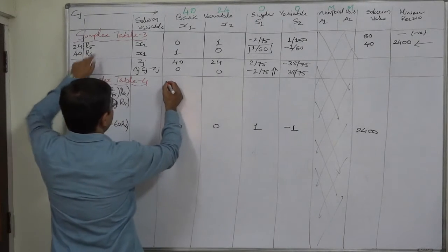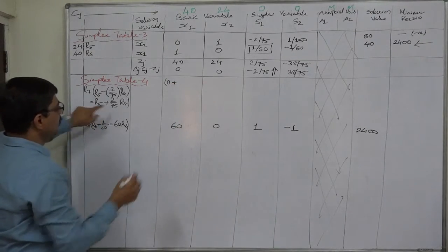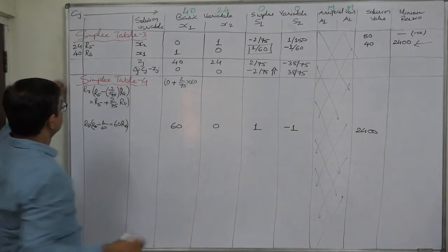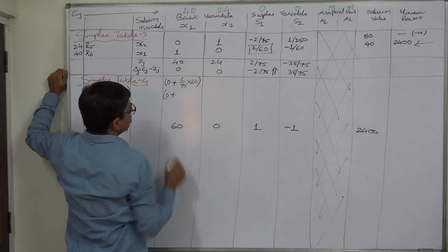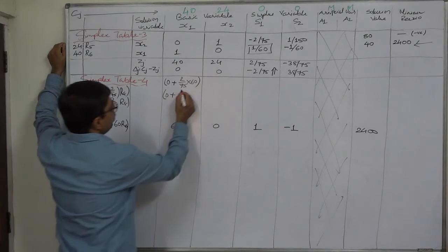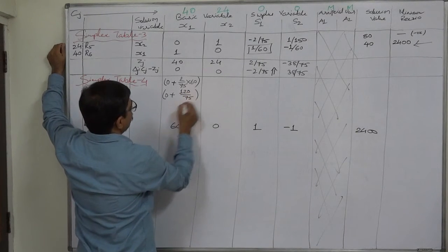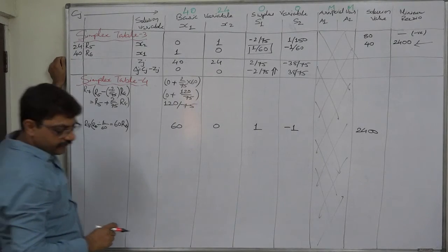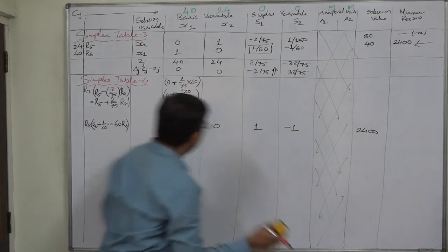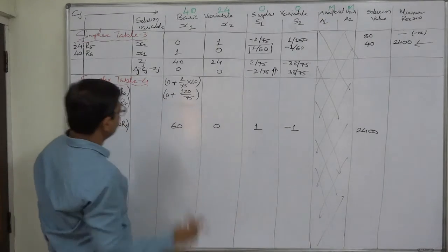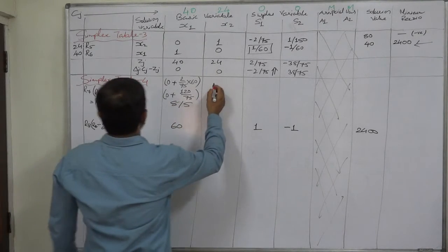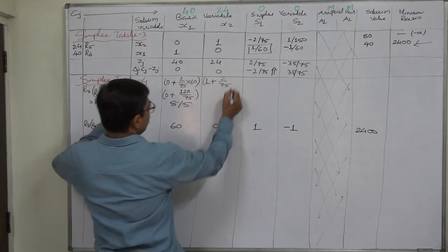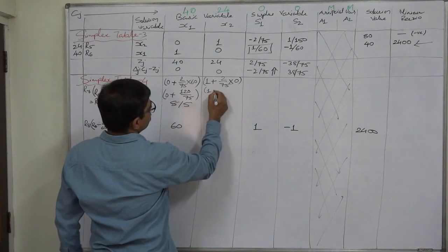R5 is 0 here, plus according to the formula 2/75 into R8 which is 60. So it is 0 plus 120/75, which we can also write as 8/5. I advise you to write the minimum possible value of the fraction, so we write 8/5. Here R5 is 1, plus 2/75 into R8 which is 0 here. So 1 plus 0 is 1.